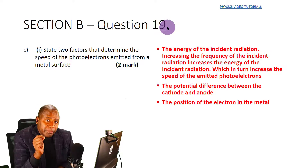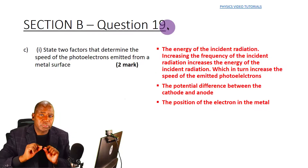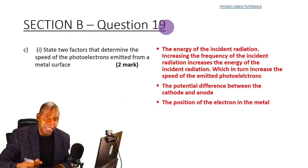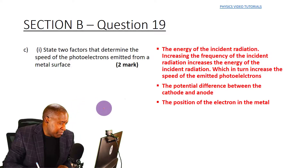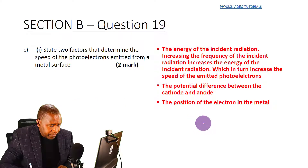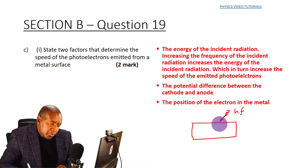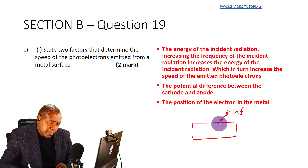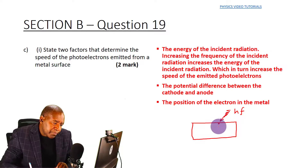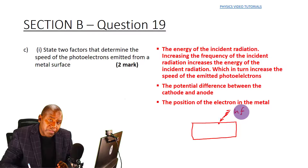A third factor affecting the speed of emitted electrons is the position of the electron in the metal. Consider the metal surface: an electron closer to the surface, once the work function is subtracted from the photon energy hf, uses the remaining energy as kinetic energy and leaves with relatively higher speed.